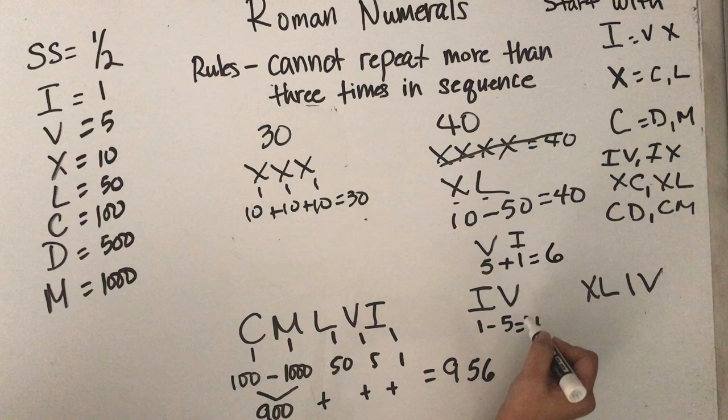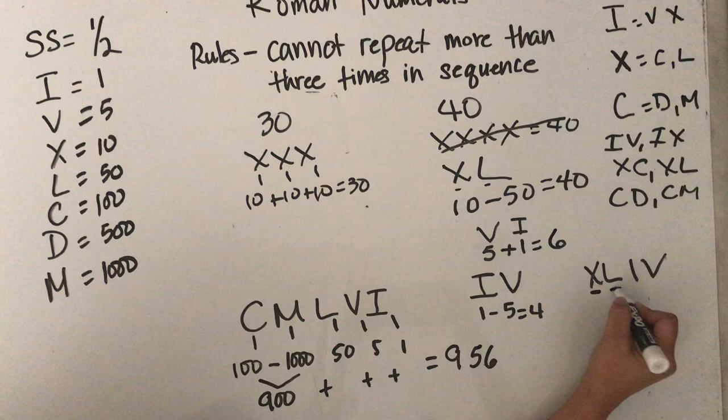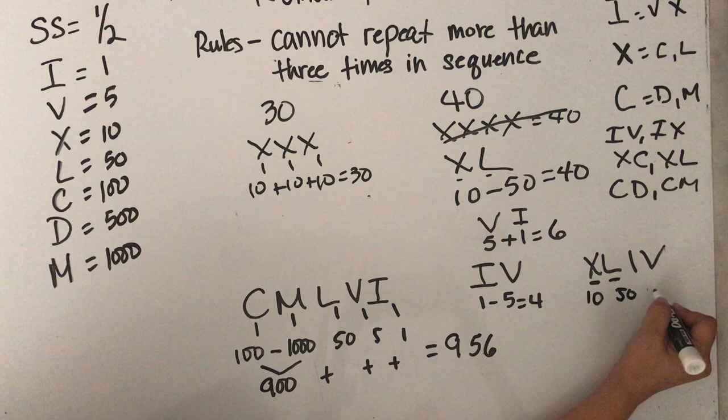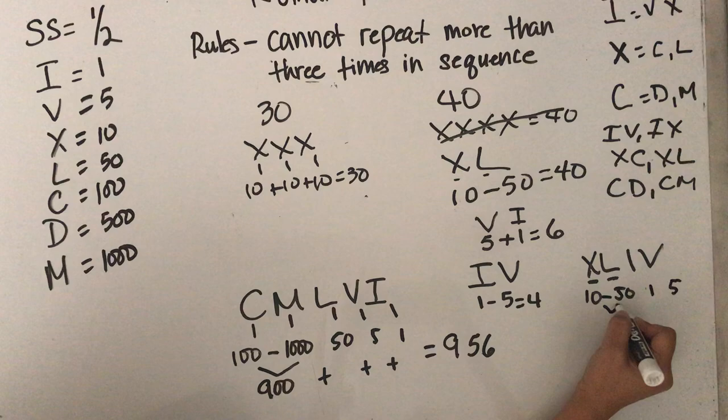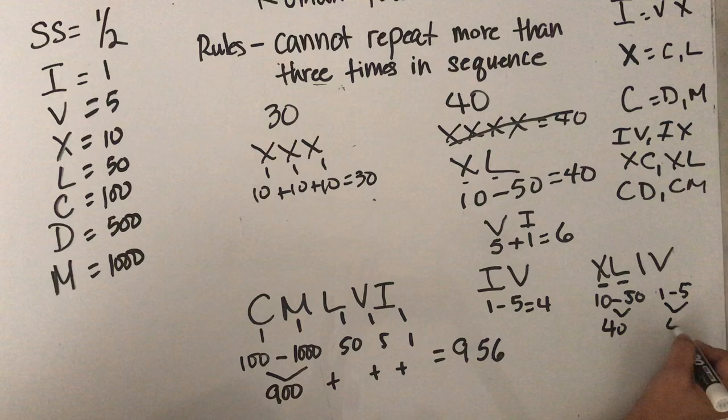That's the difference between these two. Now here, X is smaller than L. So X is 10, L is 50, I is 1, and V is 5. So 10 minus 50 is 40. 1 minus 5 is 4. So the answer here is 44.